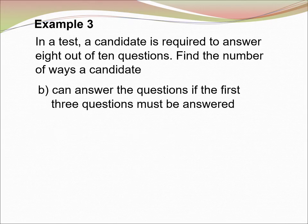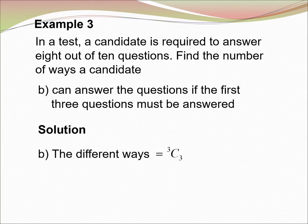(b) Find the number of ways a candidate can answer the questions if the first 3 questions must be answered. The condition is first 3 questions must be answered. So, the different way is 3C3. For 10 questions, we already answered the first 3 questions, so we still remain 7 questions only that need to be answered. So, the different way is 7C5, and we will get the answer equal to 21.